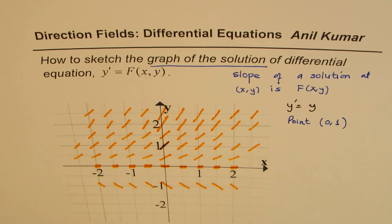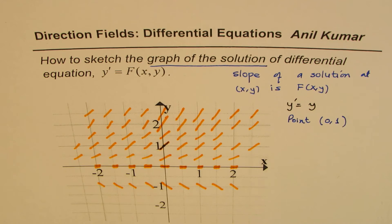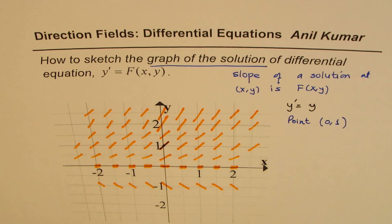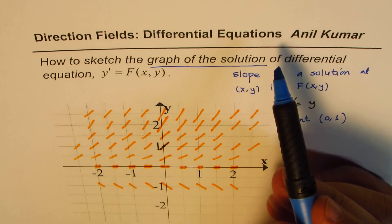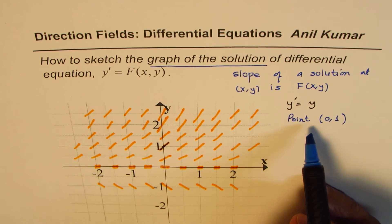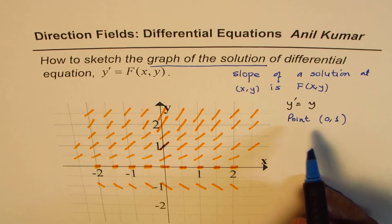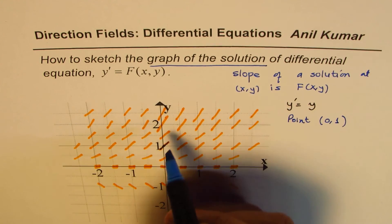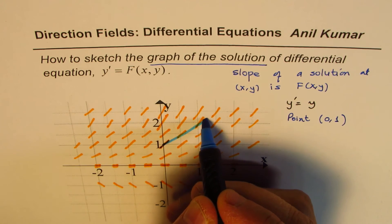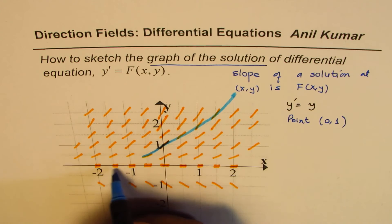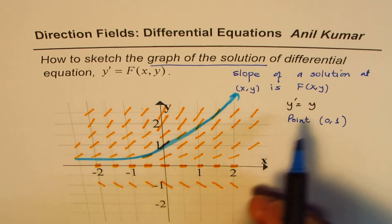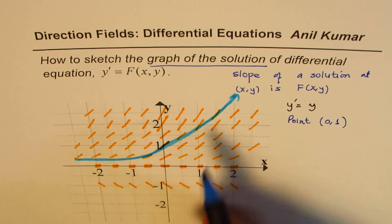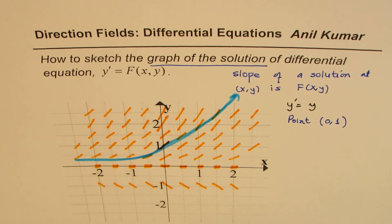We sketch these dashed lines representing the slope of the solution. Once you sketch them you see a pattern — this pattern is called the direction field. It represents the direction in which the solution curve of the differential equation moves. Since we know the curve passes through (0,1), we start from there and move along the indicated directions. The resulting curve looks like an exponential function, which is indeed the solution of y' = y.